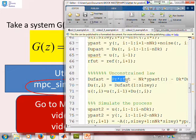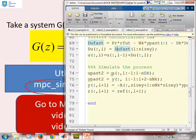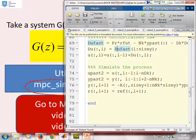The second part of the loop is implementing the control law. You'll see we've got PR times r_future, NK times y_past, and DK times delta u_past, exactly as we've done in the videos. And then we simulate the process, and that's pretty much the code. So hopefully you'll see it's fairly simple.